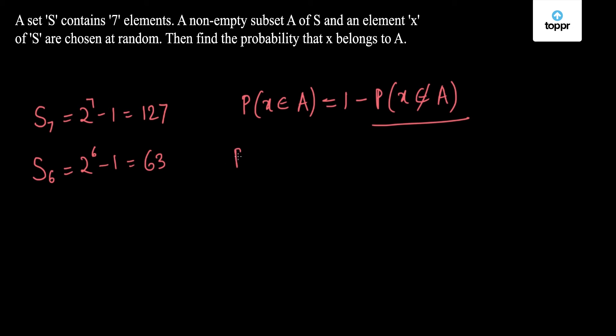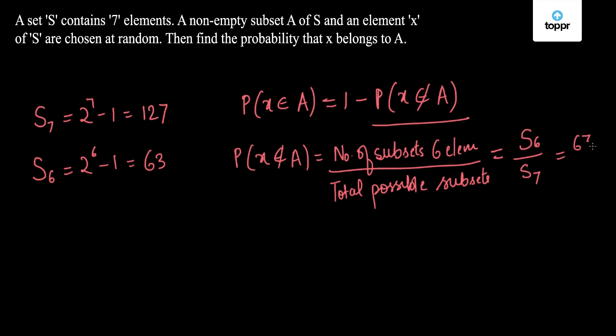So probability that X doesn't belong to A is number of subsets with 6 elements upon total possible number of non-empty subsets of S. This is equal to S6 by S7 which is 63 by 127.